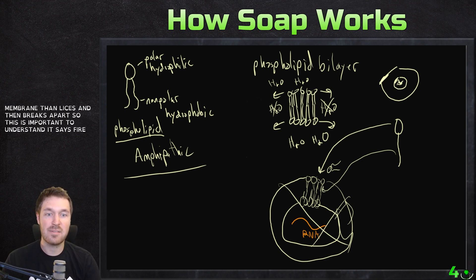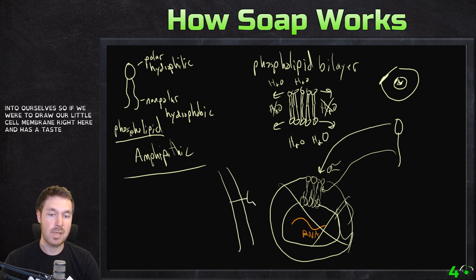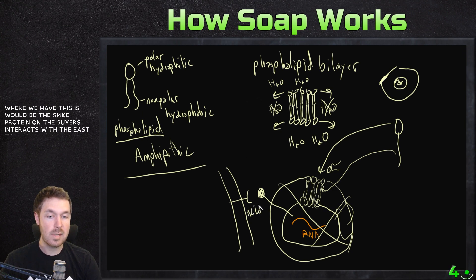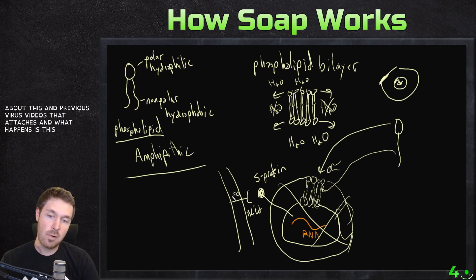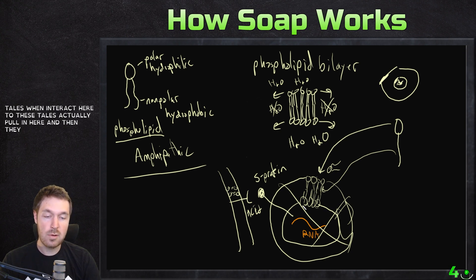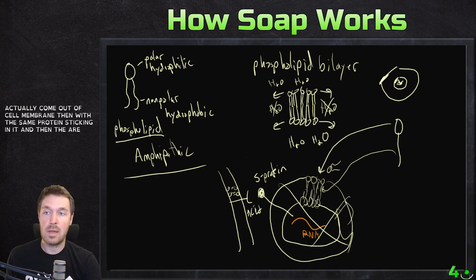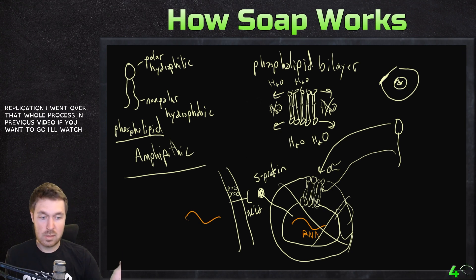This is important to understand — this virus has this phospholipid bilayer. This is also how it gets into our cells. So if we draw our cell membrane here, it has the ACE2 receptor sticking off — right here is where the spike protein on the virus interacts with that ACE2 receptor. So this is the S protein. This attaches, and what happens is this phospholipid bilayer actually fuses. When these come in close contact, these tails want to interact, and then they fuse and become one. The virus membrane actually becomes our cell membrane, and then the RNA enters our cell for replication.